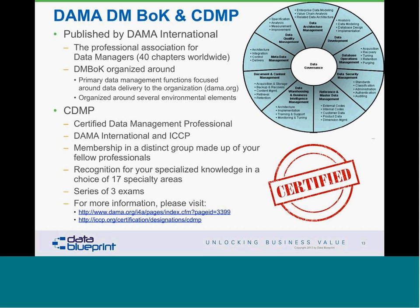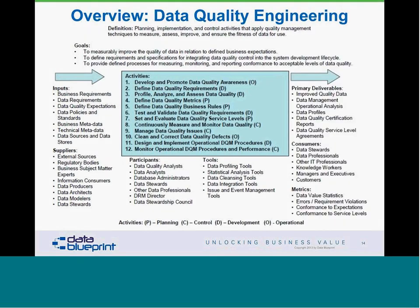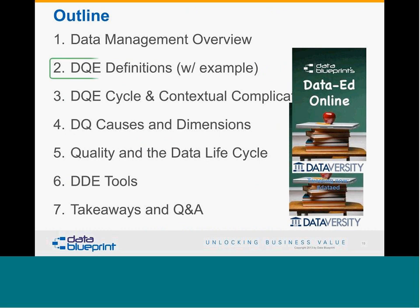In the DMBOK — the Data Management Body of Knowledge — the chapter on data quality engineering starts with an input-output diagram. You can see the inputs on the left-hand side, the activities in the teal box, the outputs and deliverables. We have goals and participants on the top and bottom. This basically comprises the subject material we're going to talk about today, and I've superimposed those same data management practice areas in there to show the connection all the way around.